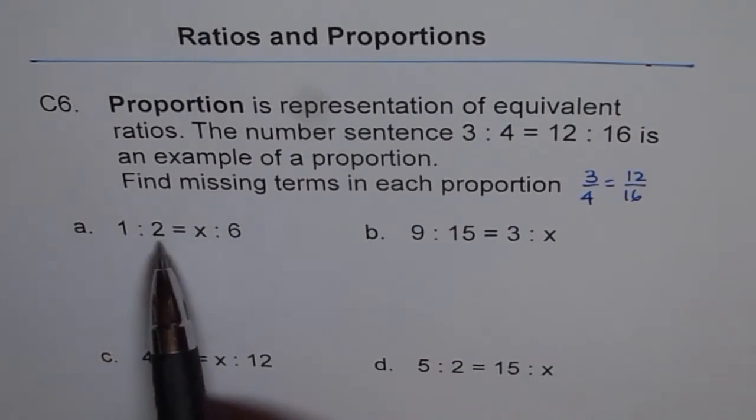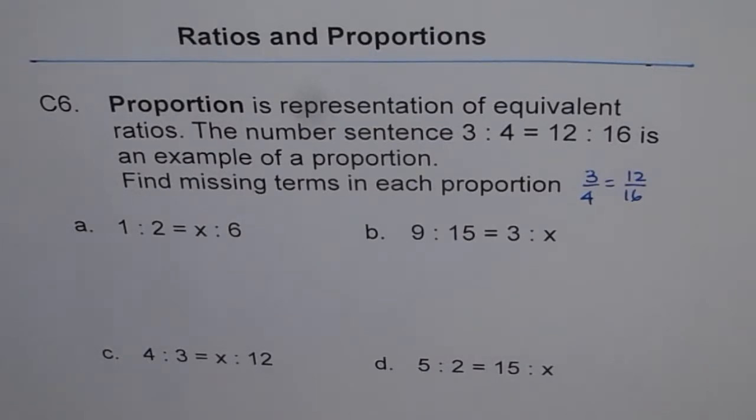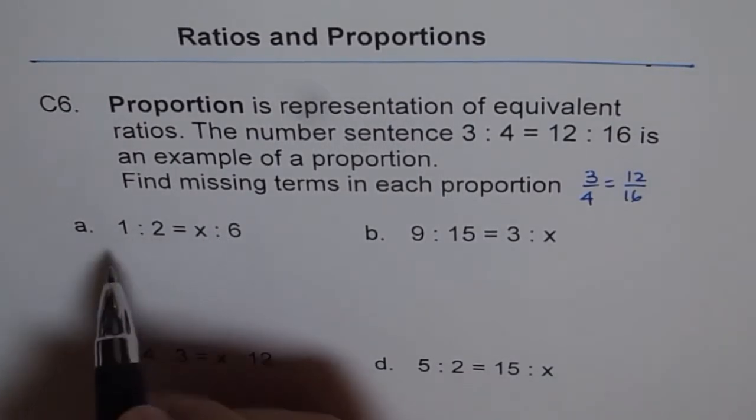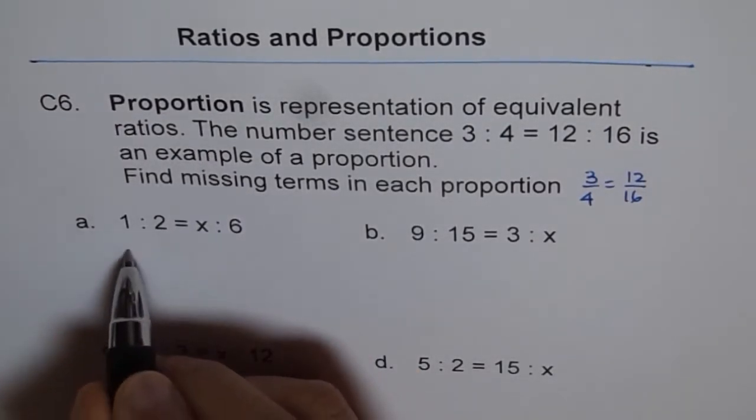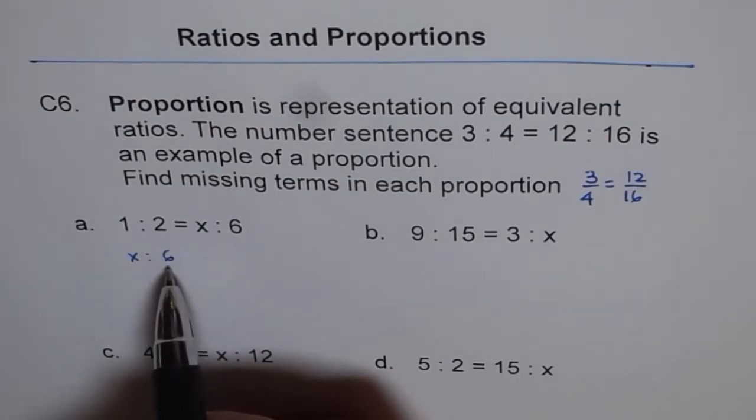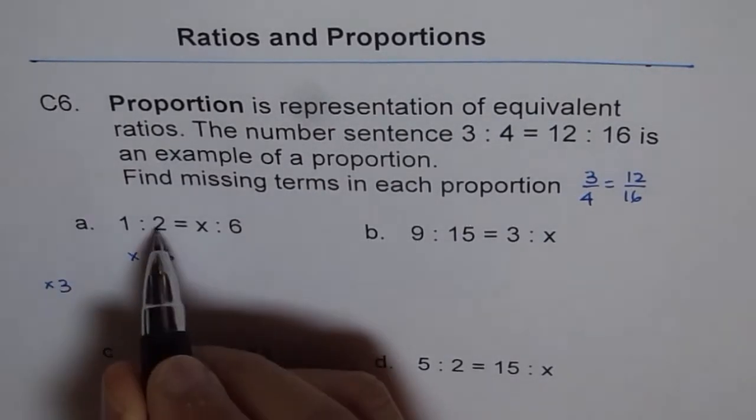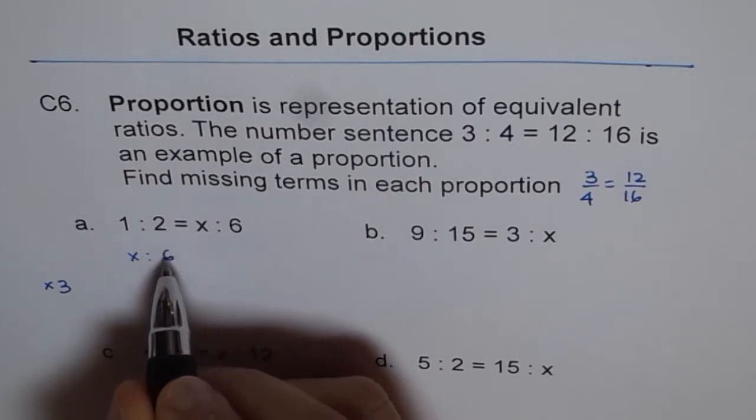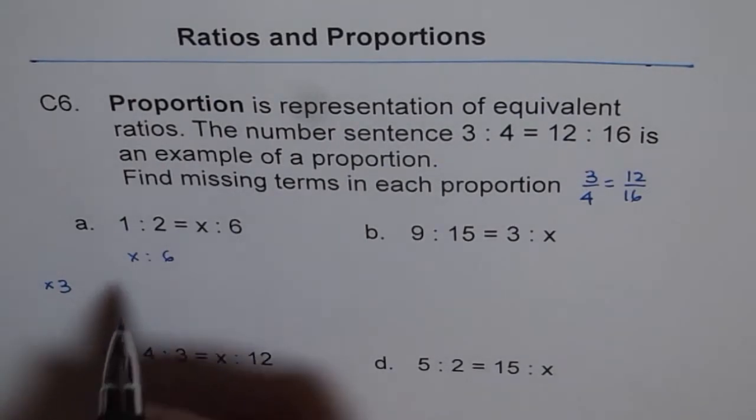Now the question is 1 is to 2 equals to x is to 6. We need to find what x is. We will apply the knowledge of equivalent ratios and scale factor to get the answer. We have to come from 1 is to 2 to x is to 6. Let's figure out how do you get from 2 to 6? That means multiply by what to get 6. We need to multiply by 3. So if I times it by 3, I get 6. So 2 times 3 is 6. We will multiply both by 3. Scale factor is 3 for us.